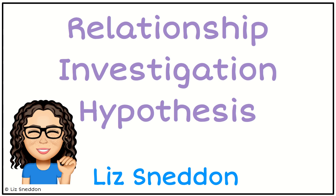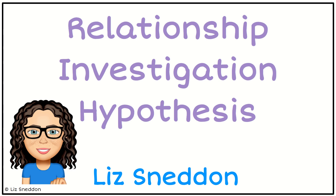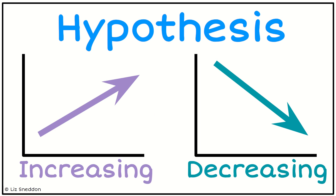Hi, it's Liz Sneddon. Let's have a look at writing a hypothesis for a relationship investigation. There are two main types of hypotheses that we would look at doing: either we look for an increasing relationship or a decreasing one. Sometimes they're called positive or negative as well, so you can use whichever word suits you.